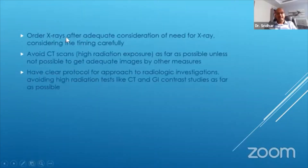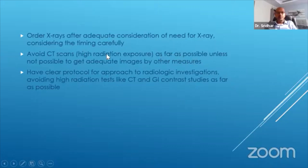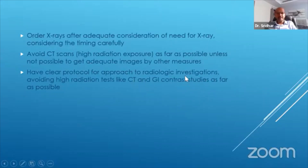In terms of radiological tests, order x-rays after adequate consideration of the need and consider the timing carefully. Avoid CT scans — high radiation exposure is there as the next slide will show. Don't use CT unless there is no other option; if you have MRI available, prefer the MRI. If you can manage with ultrasound, even better. Have a clear protocol for approach to radiologic investigations. Avoid high radiation tests like CT scan, and don't forget that GA contrast studies are also high radiation tests.